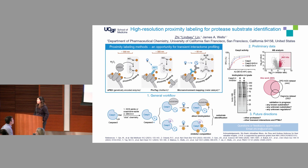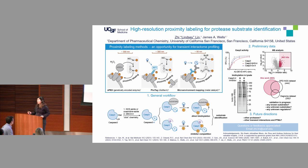How long do you have to shine the light for the photo-labeling, and can you turn it off and on? For this experiment I need five minutes of normal LED light — I don't even need high intensity light. I did kinetic experiments and found that two to three minutes is already enough to fully convert at 100 micromolar concentration of your probe.